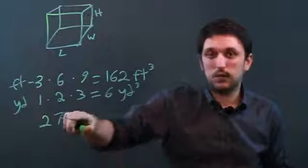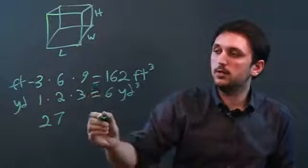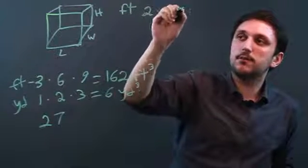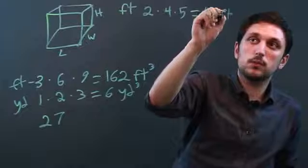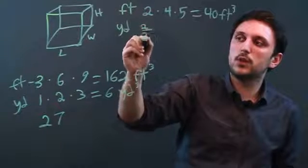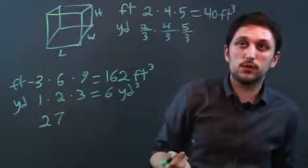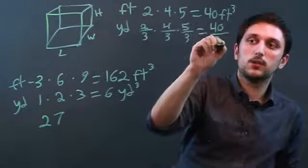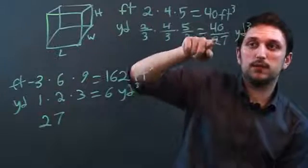Now we want to see, is this the regular ratio of cubic yards to cubic feet? We try it again with a length times width times height in feet of 2 by 4 by 5. That gives us 40 cubic feet. And in yards, 2 feet is 2 thirds of a yard, 4 feet is 4 thirds of a yard, and 5 feet is 5 thirds of a yard. So 2 times 4 times 5 is still 40, and 3 times 3 times 3 is 27, giving us 40 over 27 yards cubed. So the same thing holds — we divide by 27.